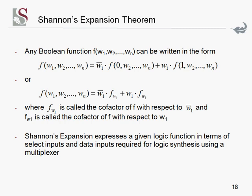Looking at this function here, Shannon says any function with a number of variables — in this case W1 to WN — you can rewrite as the inverse of one of the variables, in this case W1, ANDed with that same function where you replace W1 with a zero, OR with W1 ANDed with the whole function where you replace W1 with a one. That's Shannon in terms of mathematical expressions.